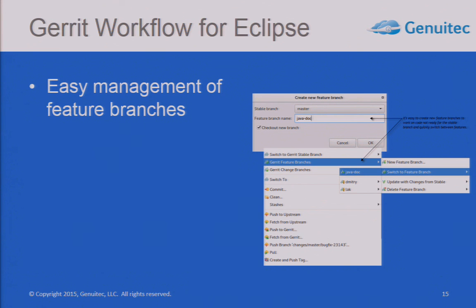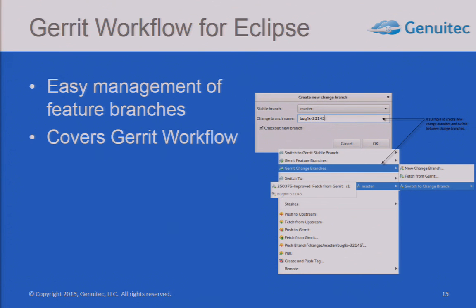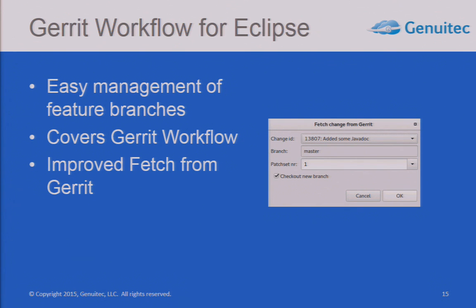When you create a new change, we basically use one stable branch — master. But if you have to manage several release streams like 11, 12, 13, then you'll probably have multiple stable branches. You can choose which branch you want to work on and it will automatically configure push to upstream for that particular branch. So there will be no mistakes where you push to the wrong version.